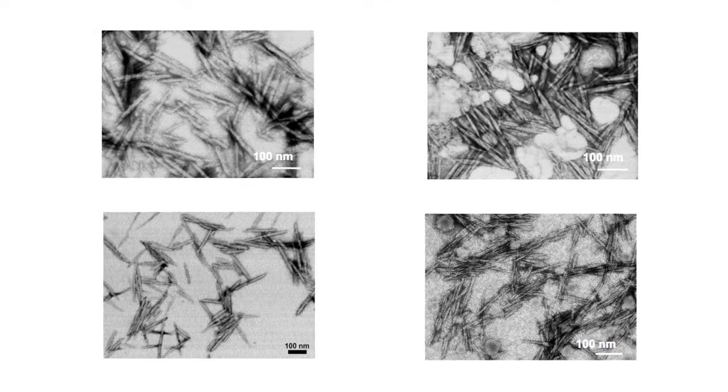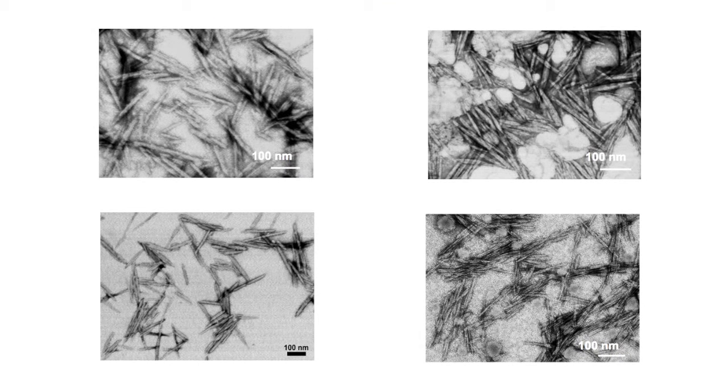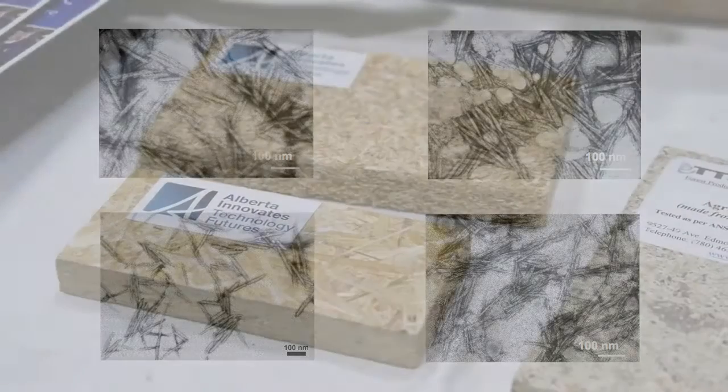What that means exactly is if you look at a cellulose fiber and say it's the size of an ice hockey rink, a pen or a pencil on that surface of that ice hockey rink would be about the size of this nanocrystal.